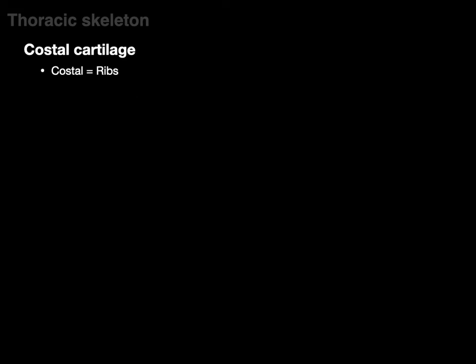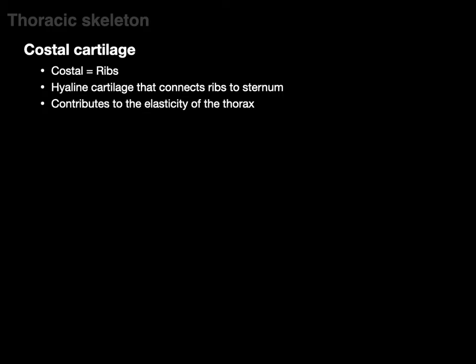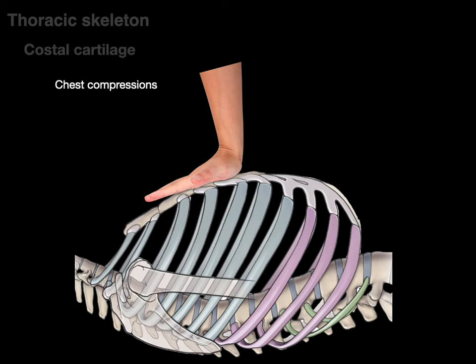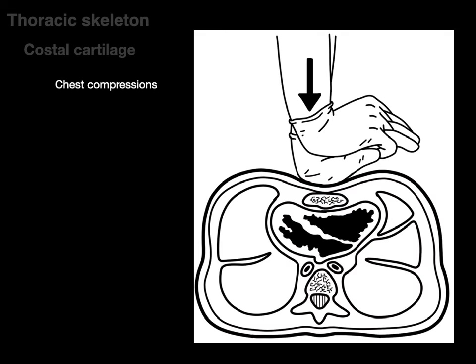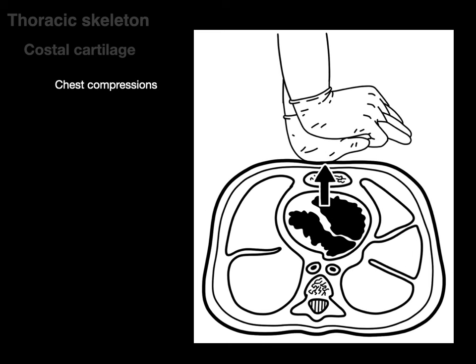Costal cartilage — the word 'costal' means rib. Costal cartilage is hyaline cartilage and its purpose is connecting ribs to the sternum. It also contributes to the elasticity of the thorax, like in breathing when your chest wall expands and collapses, or in CPR when you're doing chest compressions so you can press on the chest wall and it gives a little, then pops back up.